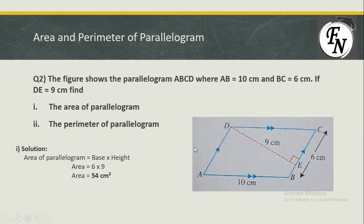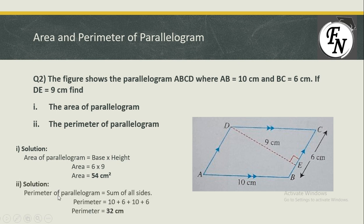Now we need to calculate the perimeter of the parallelogram. To find the perimeter, we add all the side lengths. For parallelogram ABCD, we add sides AB, BC, CD, and DA. AB and CD are both 10 centimeters, giving 20 centimeters. BC and DA are both 6 centimeters — since opposite sides of a parallelogram are equal — giving 12 centimeters. Adding all sides: the perimeter of the parallelogram is 32 centimeters.